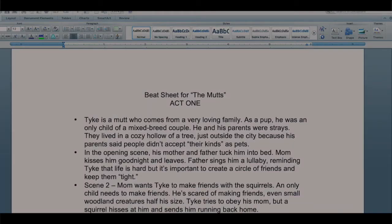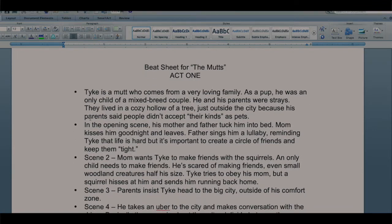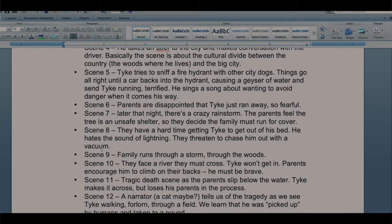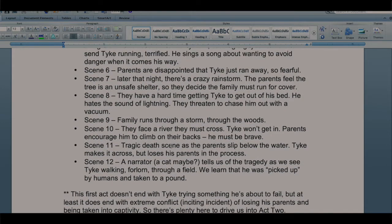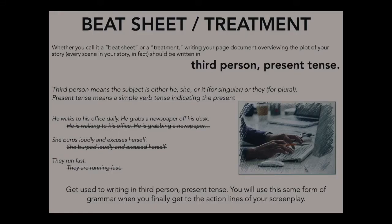So whether you call it a beat sheet or a treatment, writing up your document, you're overviewing the plot of your story. Every scene of your story you are going to outline, and they should all be written in third-person present tense. Third-person means the subject is either he, she, it, or they. Present tense simply means a simple verb tense indicating the present. For example: 'He walks to his office daily. He grabs the newspaper off his desk.' Many people write 'he is walking' or 'he is grabbing a newspaper' — no, that's incorrect. 'She burps loudly and excuses herself' — that is the correct way it should be written, both in your screenplay and in your treatment.